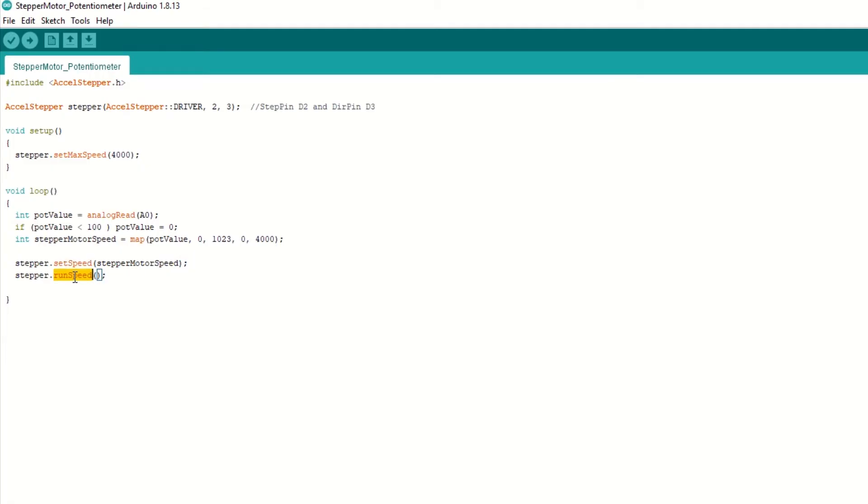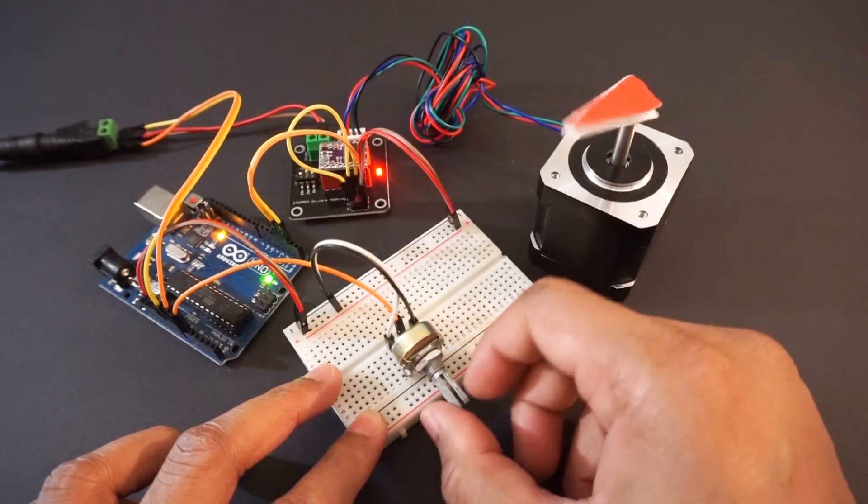Upload the code. You can see that the speed is controlled using potentiometer.